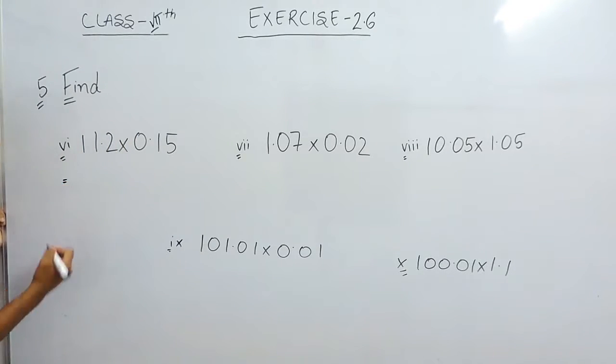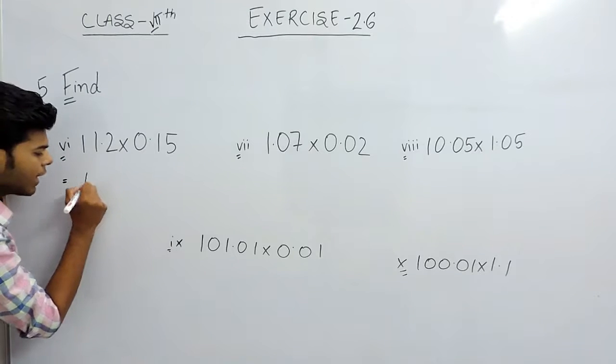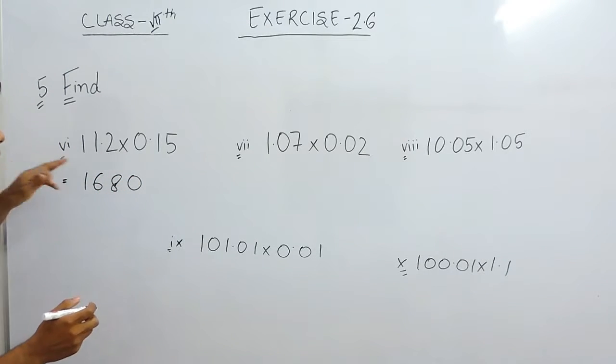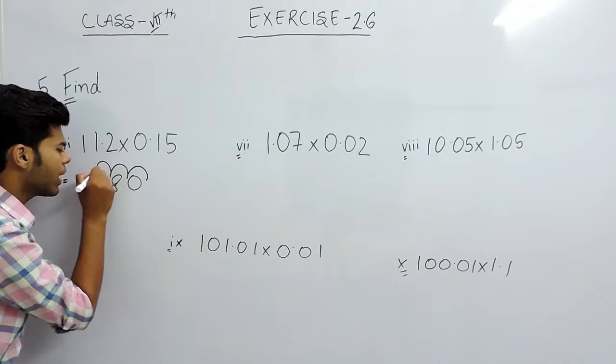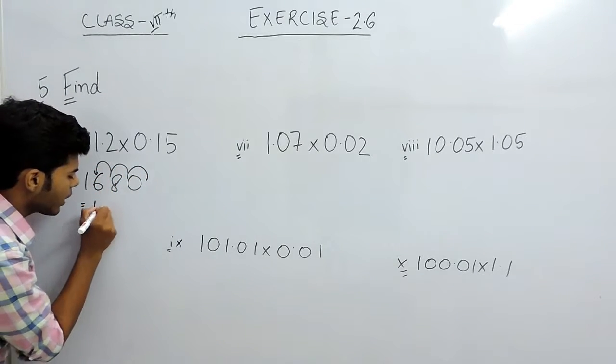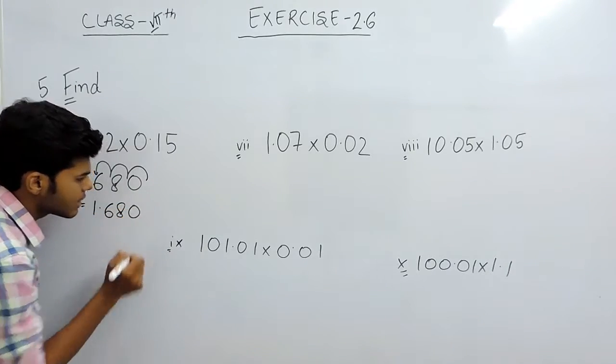The 6th part is, we will multiply this. It will give us 1680, and now we will put the decimal 3 points towards the left. So 1, 2, and 3, and the answer will be 1.680.